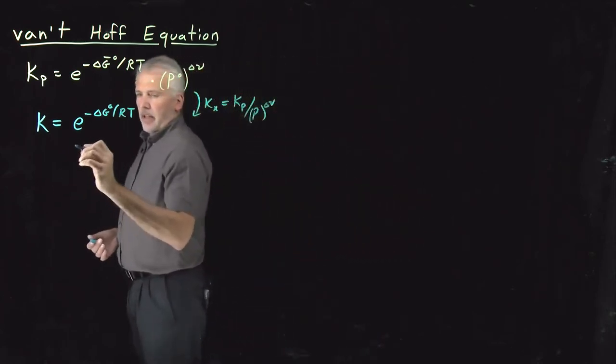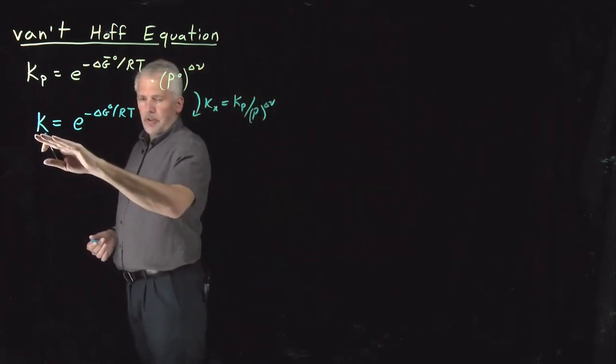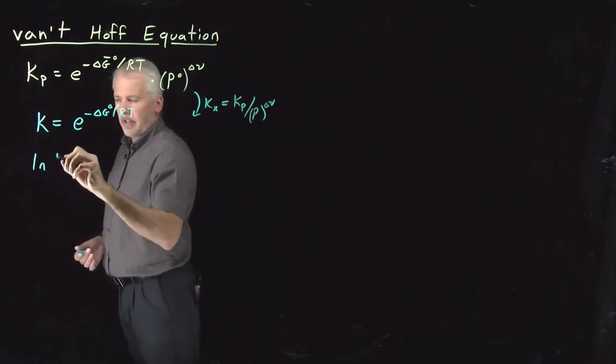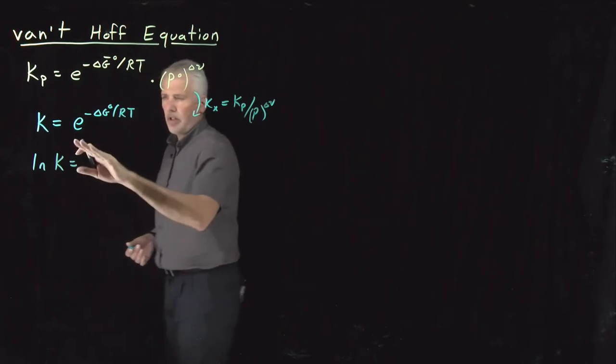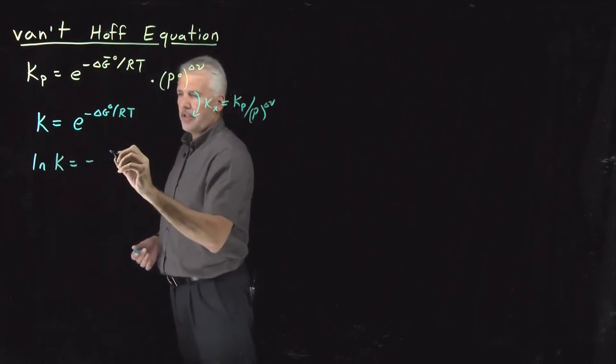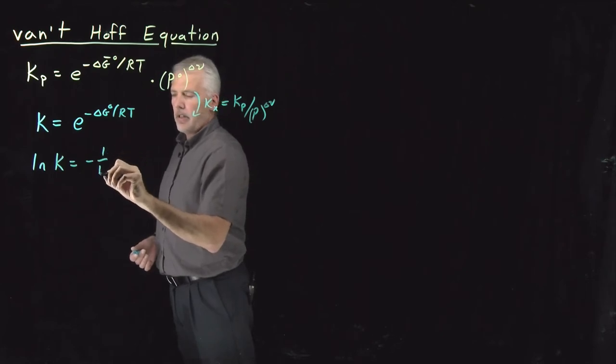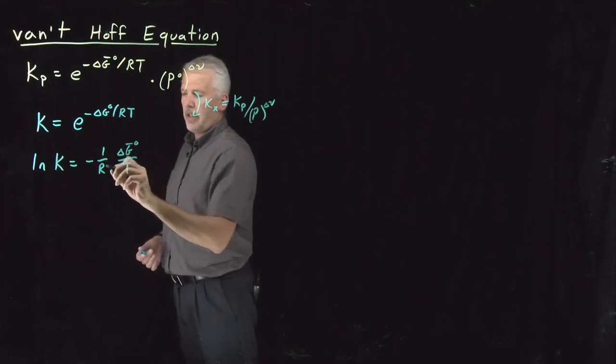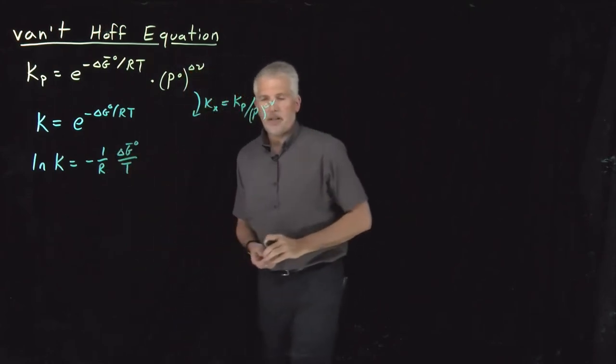But to make it a little more convenient, I'm going to take the natural log of it so that on the right side, I don't have e to the minus delta G over RT. I just have, and I'm going to write that as delta G over T, and then the one over R dependence separately.